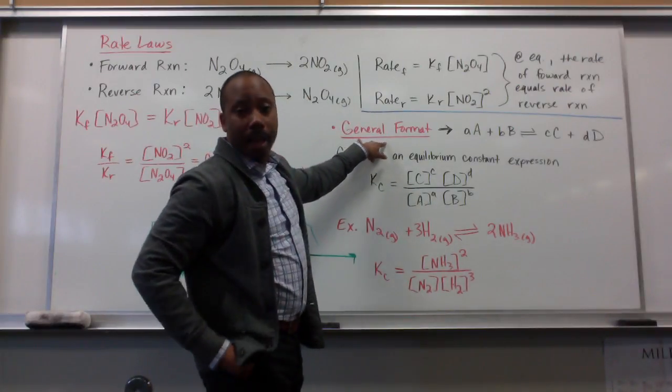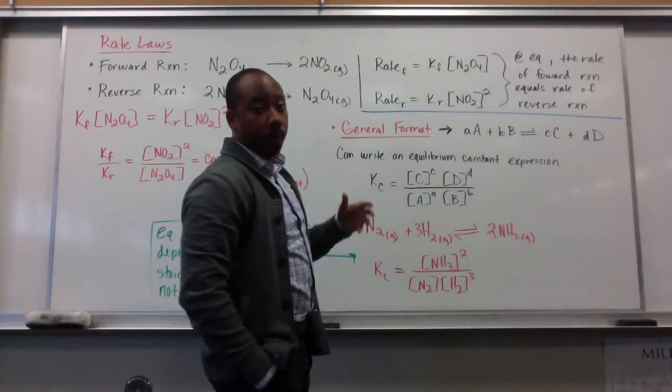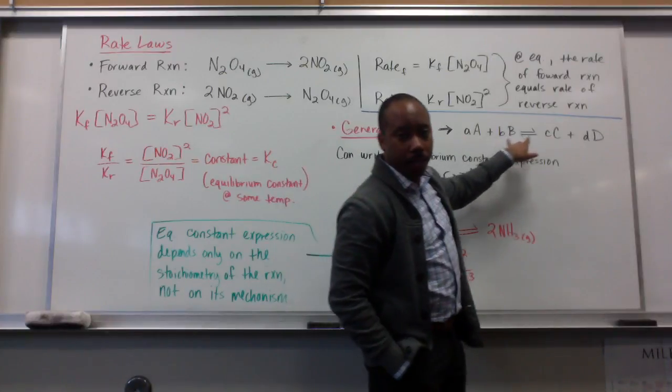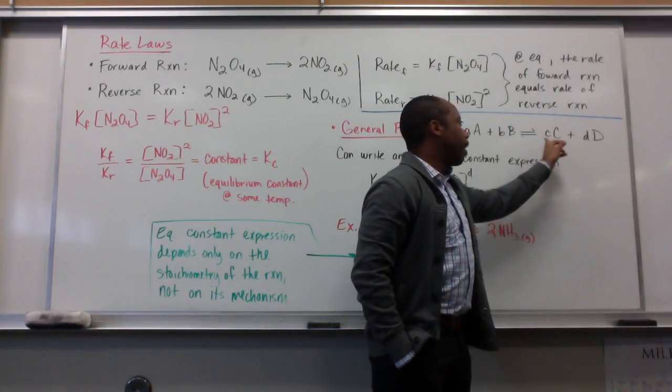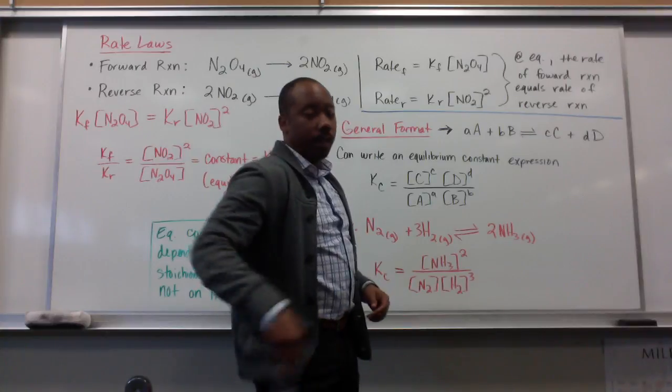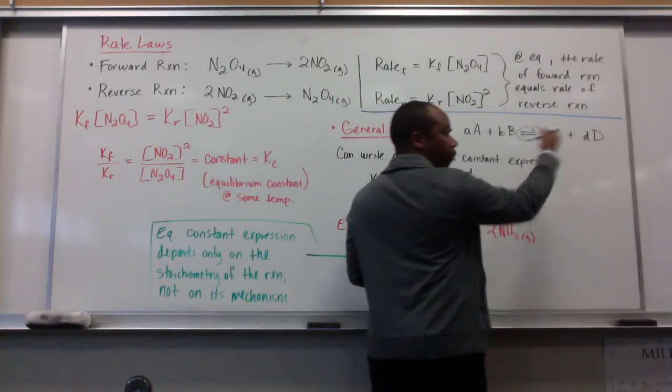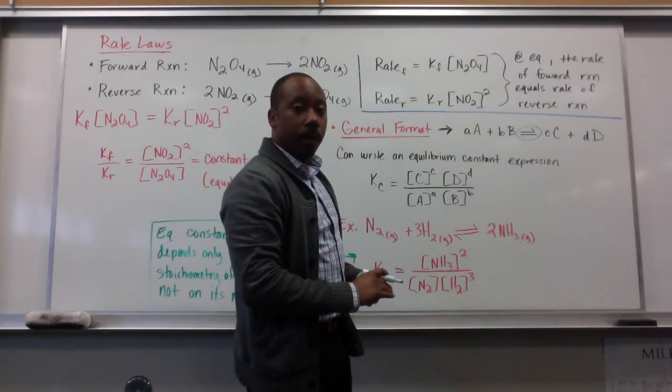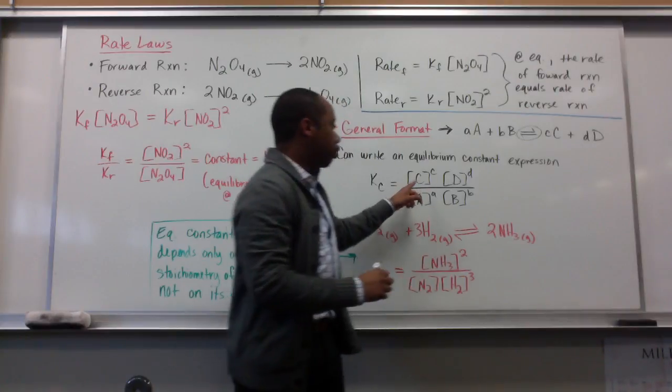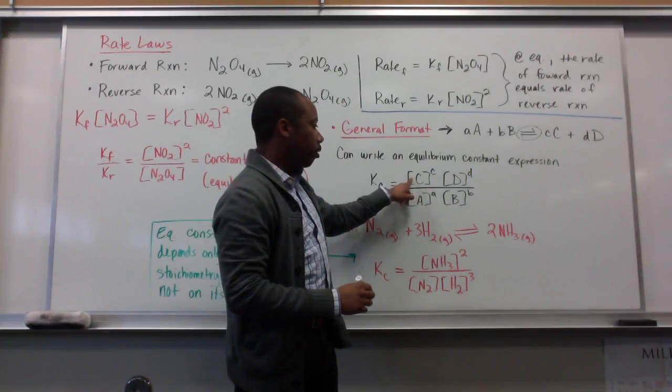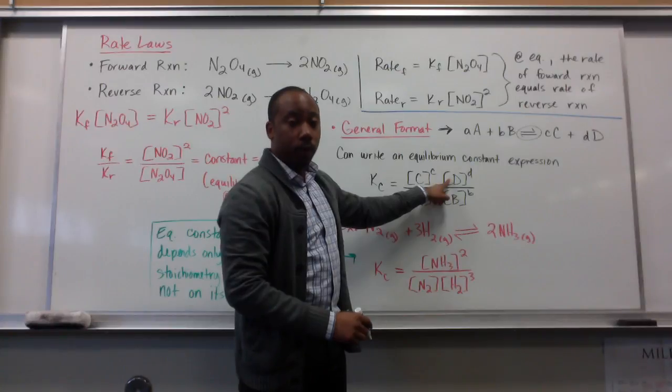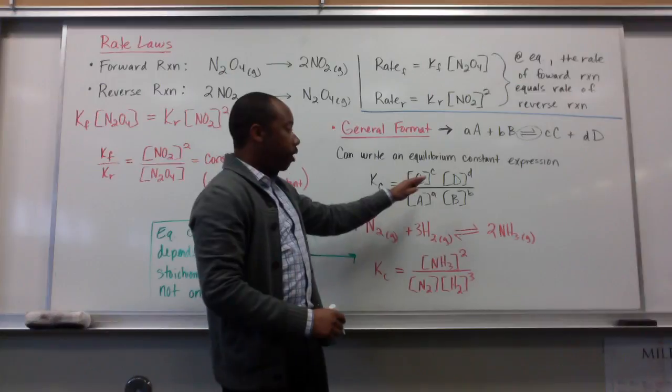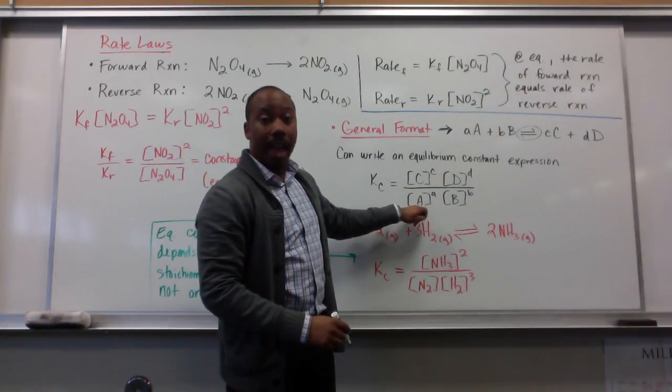Now, the general format, when we're talking about writing equilibrium expressions, is going to be for reactions like this. We have A plus B goes to C plus D, and it's also reversible here. It's an equilibrium. And this little symbol here, the arrow going forward and the arrow going backwards, means we're in equilibrium. We can write an equilibrium constant expression by taking the concentration of our products, putting them in the numerator, raising them to the power of their stoichiometric coefficient...